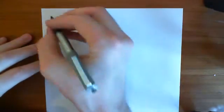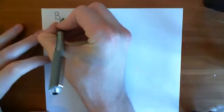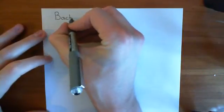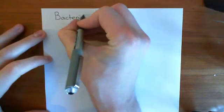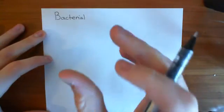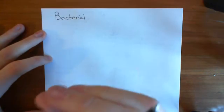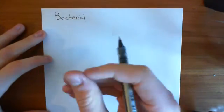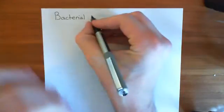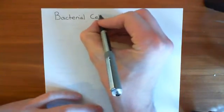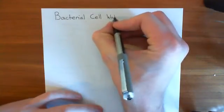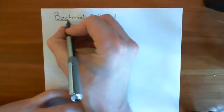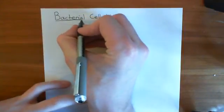Welcome to this first video in the playlist on antibiotics and antibiotic resistance. In this video we're going to have a look at the bacterial cell wall and its function mainly. We're not going to look at its actual structure in too much detail — we'll save that for the coming videos where we look at how it's synthesized, and we'll then see how antibiotics affect the synthesis of the bacterial cell wall. In this video we're going to just have a sort of outline — what the function of the bacterial cell wall is and why it's so essential for bacteria to have a cell wall.